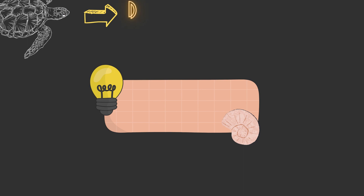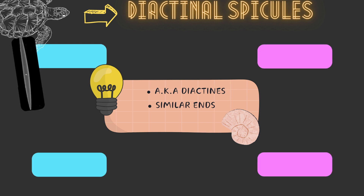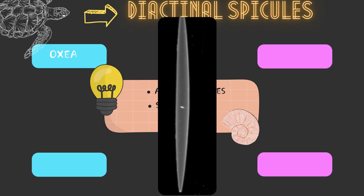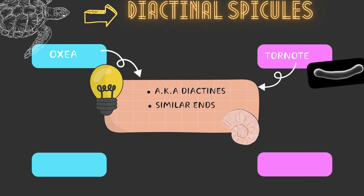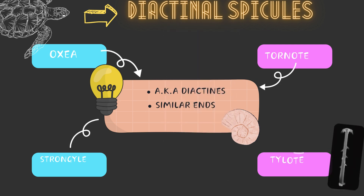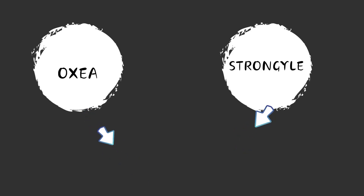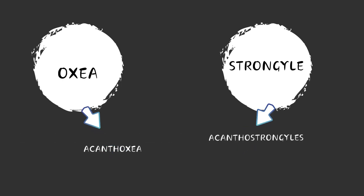Diactinal spicules, also called diactines or rhabds, are developed due to uniform growth in both directions, so have similar ends. On the basis of their ends: 1. Oxea — a rhabd with both pointed ends. 2. Tornote — a rhabd with both spear-shaped ends. 3. Strongyle — a rhabd having both rounded ends. 4. Tylote — a rhabd having both knobbed ends. When oxea and strongyle diactinal spicules are covered with spines, they are called acanthoxa and acanthostrongyle respectively.